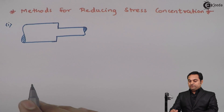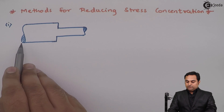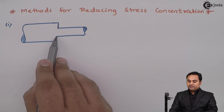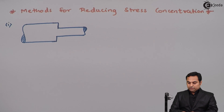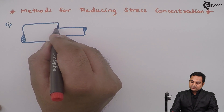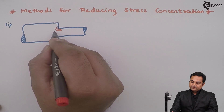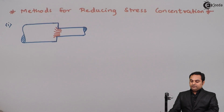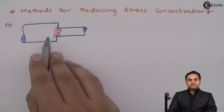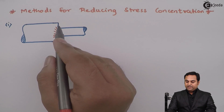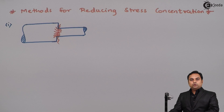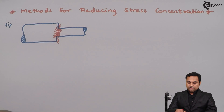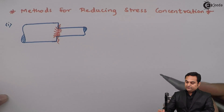Suppose we have an object in which the area decreases suddenly — here we are having sharp corners. Because of the presence of sharp corners, stresses will accumulate at this junction, and because of the stress concentration here the material will break from this junction. So to avoid the stress concentration at this region, we can modify the shape of this component.